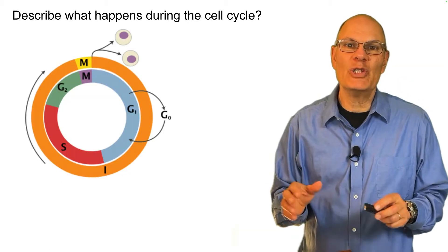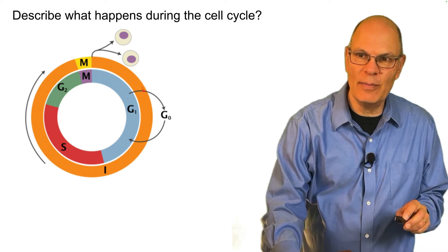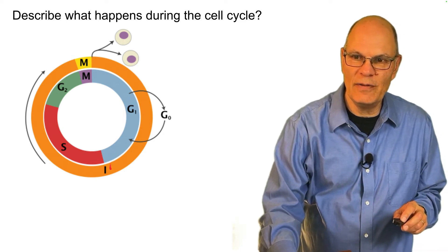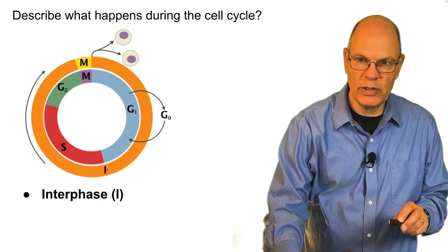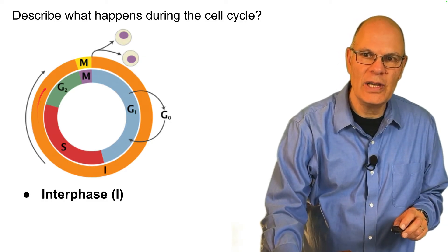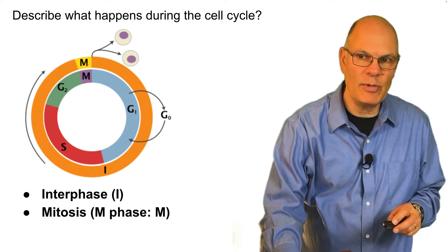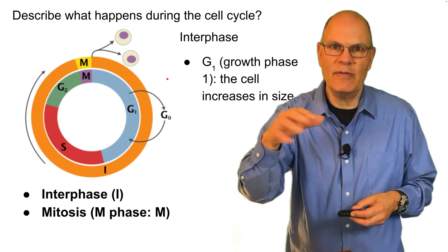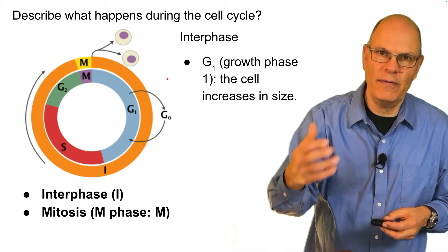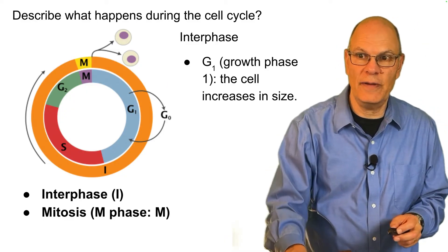Describe what happens during the cell cycle. The cell cycle, as you can see in this diagram, can be divided into two main phases. The outside orange part of the circle is interphase. The yellow part is mitosis or M-phase, represented by the letter M. During interphase, you can subdivide three basic phases, but the cell doesn't appear to be dividing.